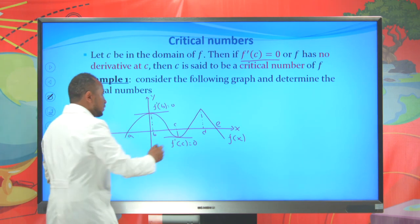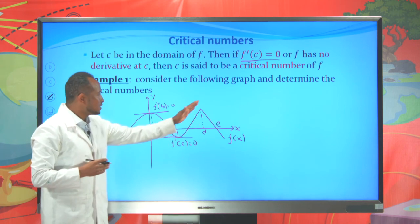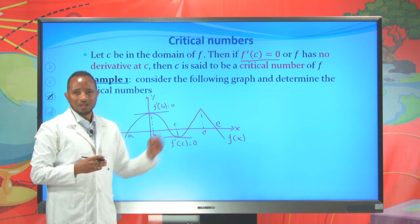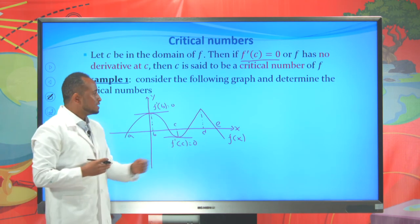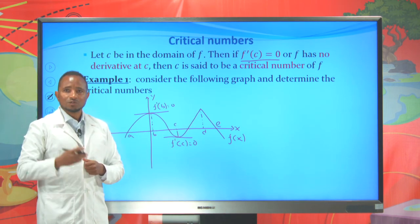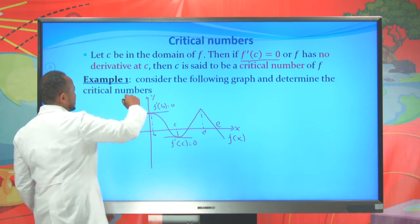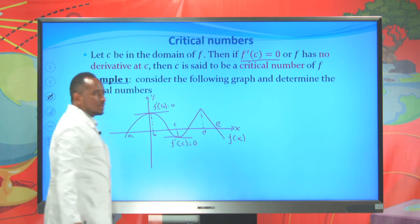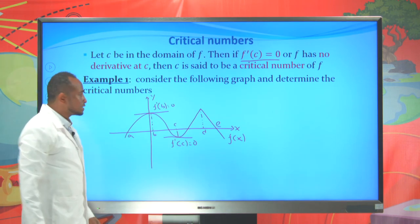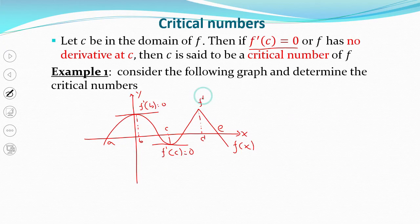If you see point D, it is a sharp point. At this point, we can't draw a unique tangent line. So the derivative of this function at point D does not exist. This is also a critical point, because a critical number is also found at a point where the derivative of the function does not exist. Therefore, the derivative of our function at D does not exist.